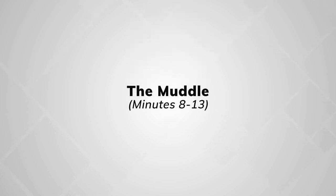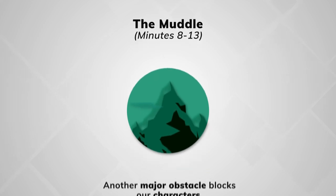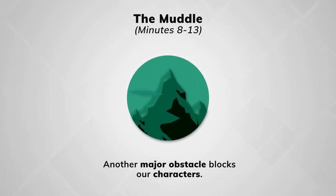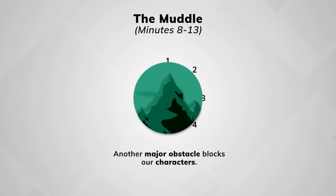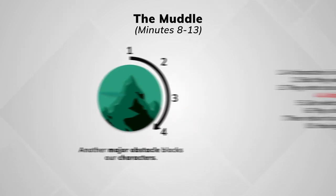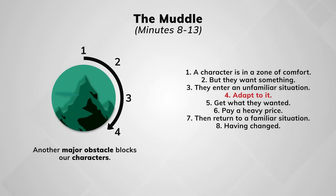At minute eight, Charney says that the sitcom will move into what he calls the muddle. This is where another major obstacle blocks our characters — they can't simply end the conflict here or the story would be over. On the story circle, the muddle is point four. The characters are adapting to their unfamiliar situation and trying to get what they want as the story evolves in front of them. They may face another obstacle and adjust their plan.